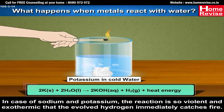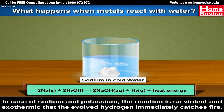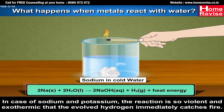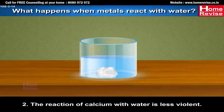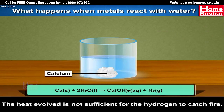The reaction of potassium with water: 2K(s) + 2H₂O(l) → 2KOH(aq) + H₂(g) + heat energy. The reaction of sodium with water: 2Na(s) + 2H₂O(l) → 2NaOH(aq) + H₂(g) + heat energy. The reaction of calcium with water is less violent; the heat evolved is not sufficient for the hydrogen to catch fire: Ca(s) + 2H₂O(l) → Ca(OH)₂(aq) + H₂(g).